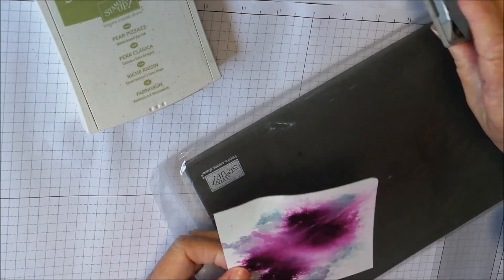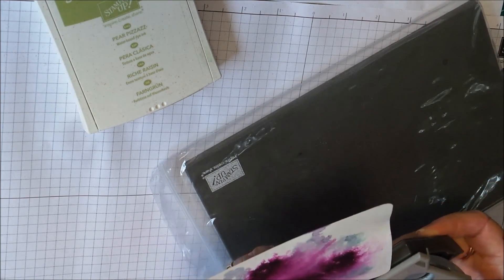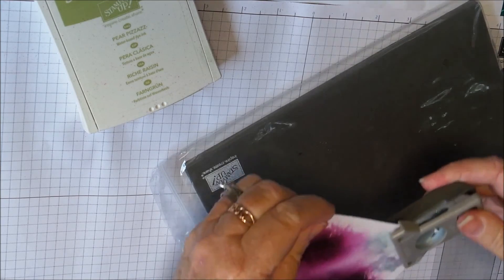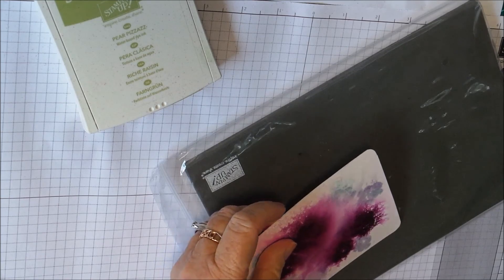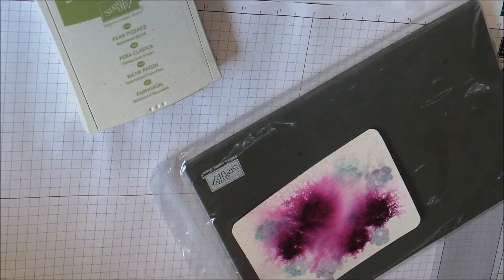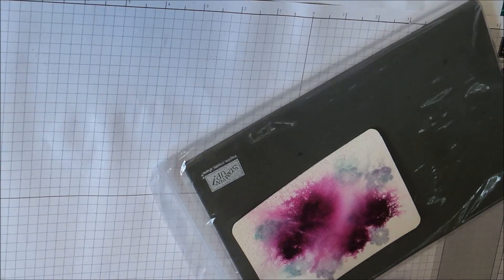So you need a bit of distance. So that's dried and it still doesn't look like much. I'm just going to round these corners and then I'm going to get the leaves which we're not going to spritz. I've just used my Project Life corner rounder on that and this time I'm using Pear Pizzazz.